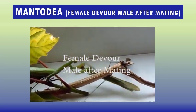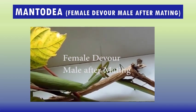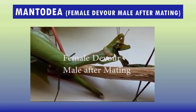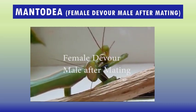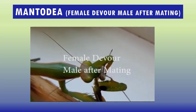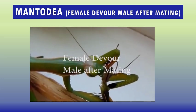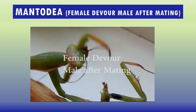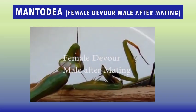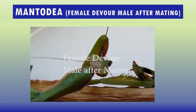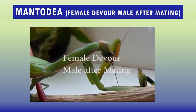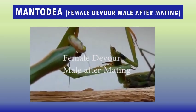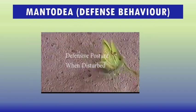In Mantodia, females sometimes devour the male after mating — also called sexual cannibalism. It is common among most captive species of mantises. It has sometimes been observed in natural populations, where about a quarter of male–female encounters result in the male being eaten by the female. Around 90% of the captive species of mantises exhibit sexual cannibalism.